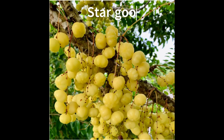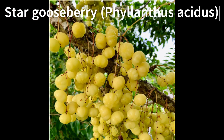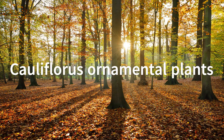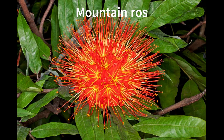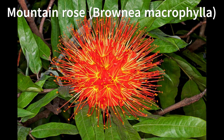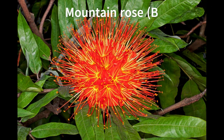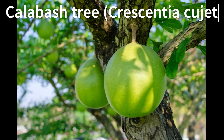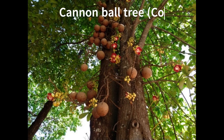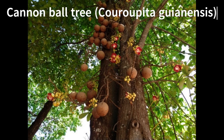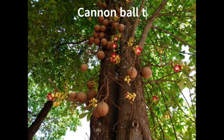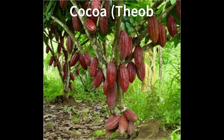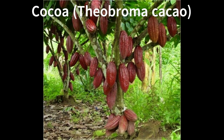Star gooseberry, scientifically known as Phyllanthus acidus. Cauliflorous ornamental plants include: Mountain rose, botanically called Brownea macrophylla; Calabash tree, scientifically known as Crescentia cujete; and Cannonball tree, botanically called Couroupita guianensis. Cauliflorous plantation crops include Cocoa, scientifically known as Theobroma cacao.